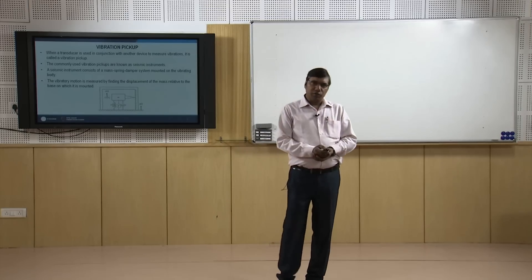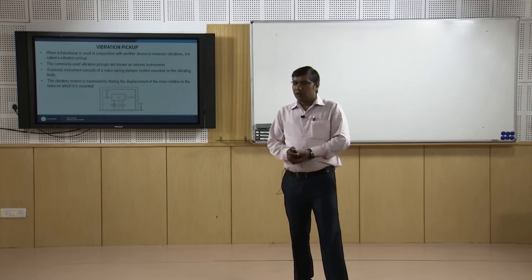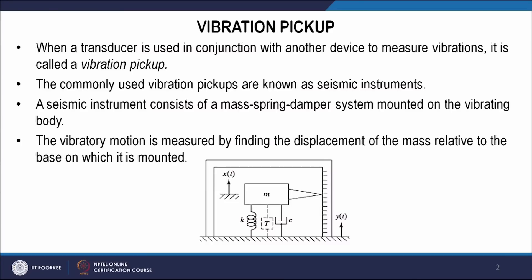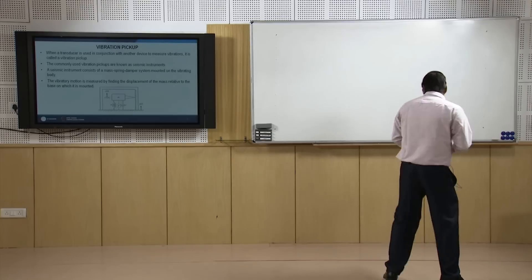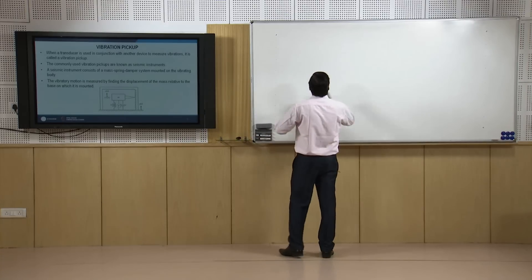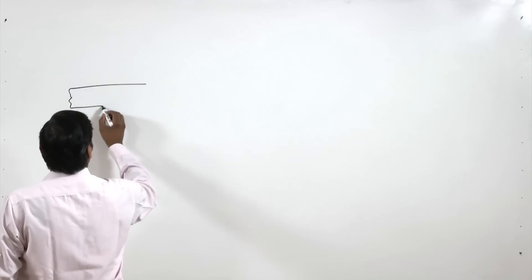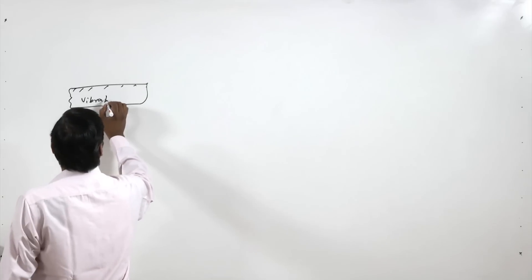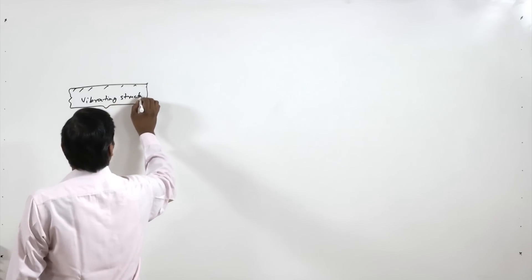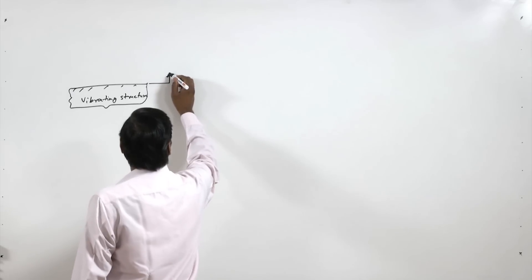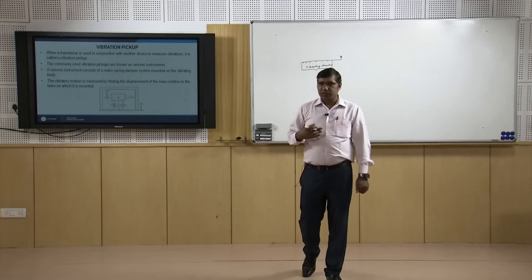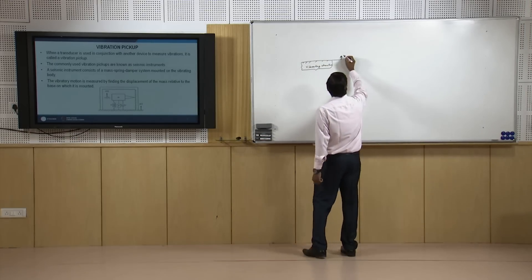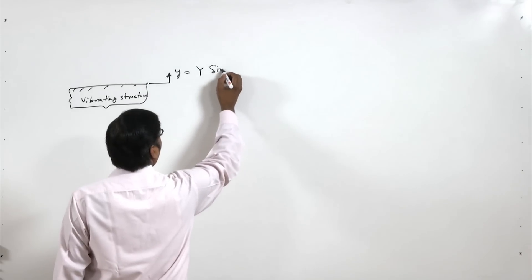Vibration pickups are called seismic instruments and they consist of mass, spring, and damping elements. Suppose I have some structure that is vibrating — this is my vibrating structure or surface. It is vibrating with certain motion and for simple analysis we assume just one harmonic, so we assume it is vibrating as y = Y sin(ωt).